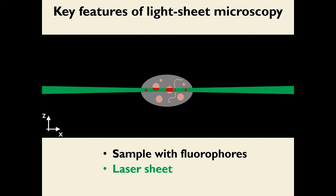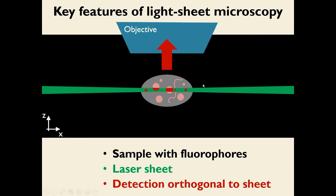You can see this is an XZ view of the sample. The light sheet comes in from the right in this case and propagates through the sample. Where it intersects the sample and intersects a region where there are fluorophores, it will excite those fluorophores, and those fluorophores will emit lower energy photons in every direction. The third feature is an objective placed orthogonal to the angle of incidence of the light sheet, and this is where you detect the fluorescence that results from excitation with the sheet.